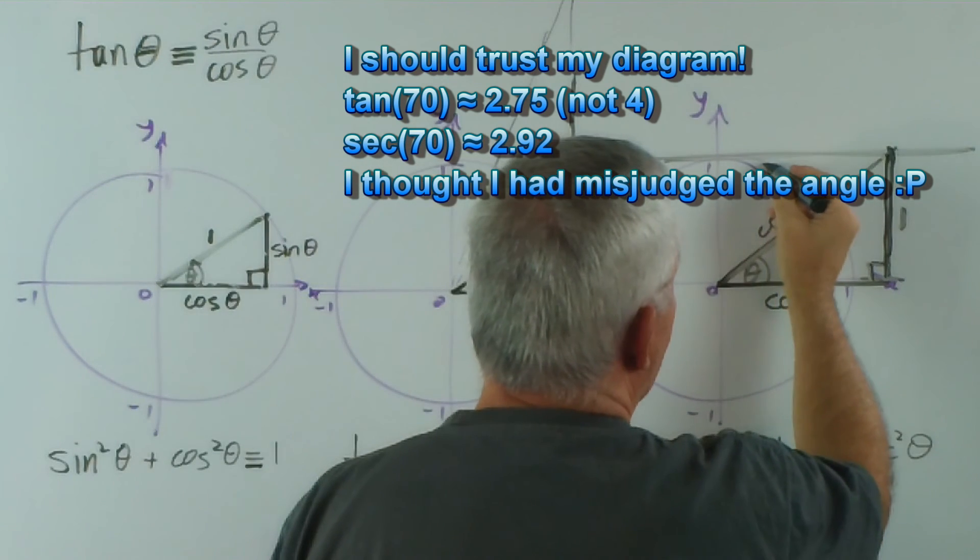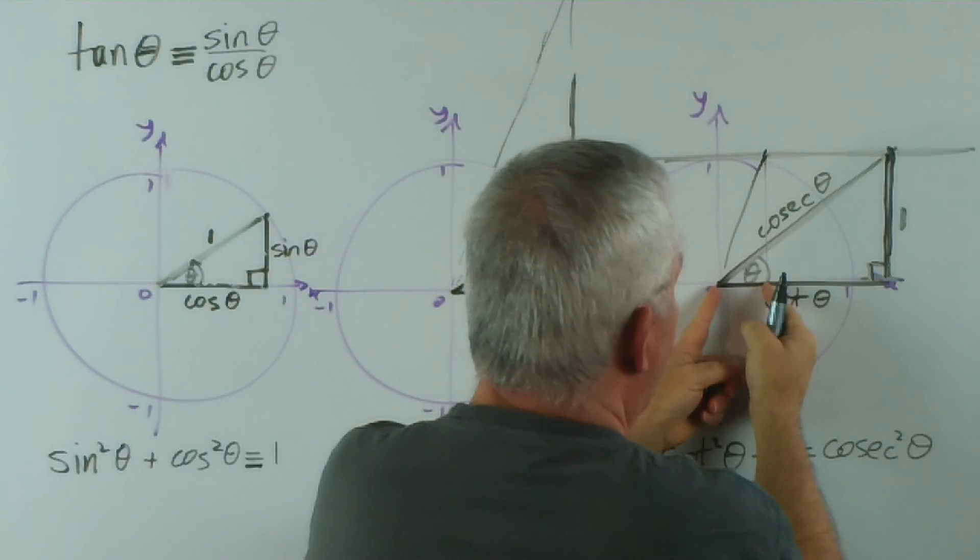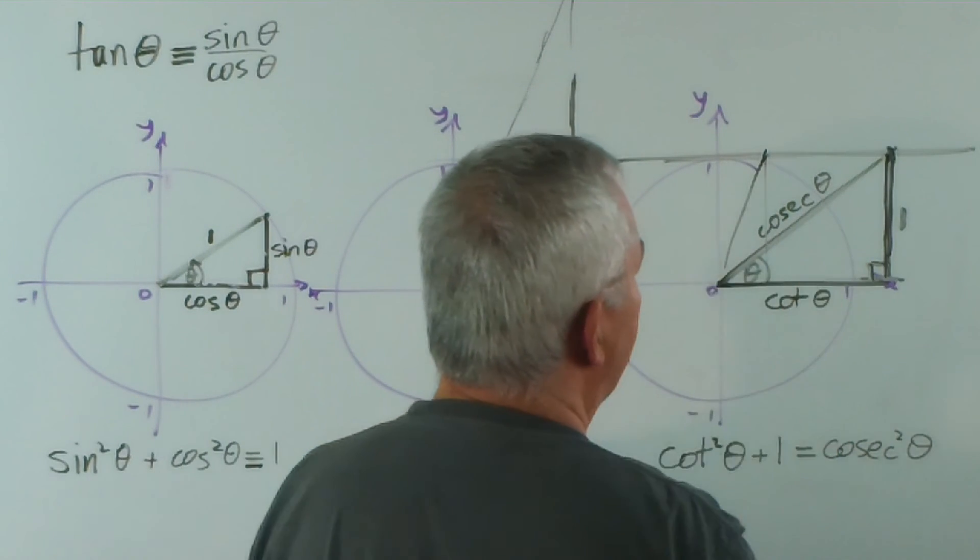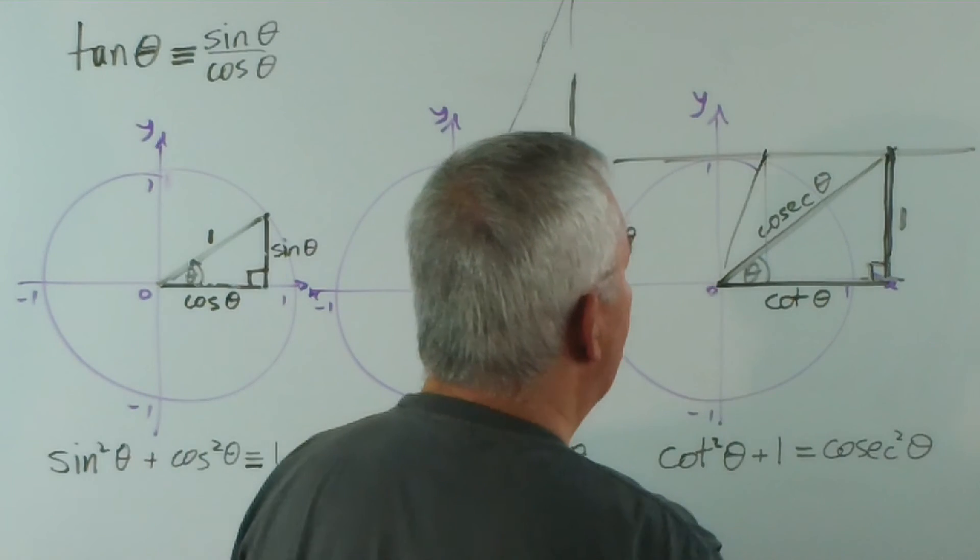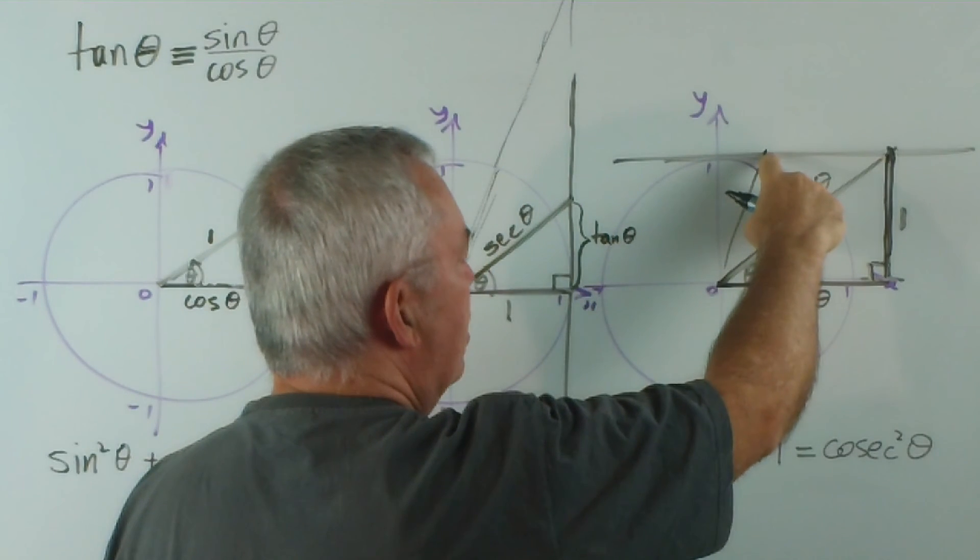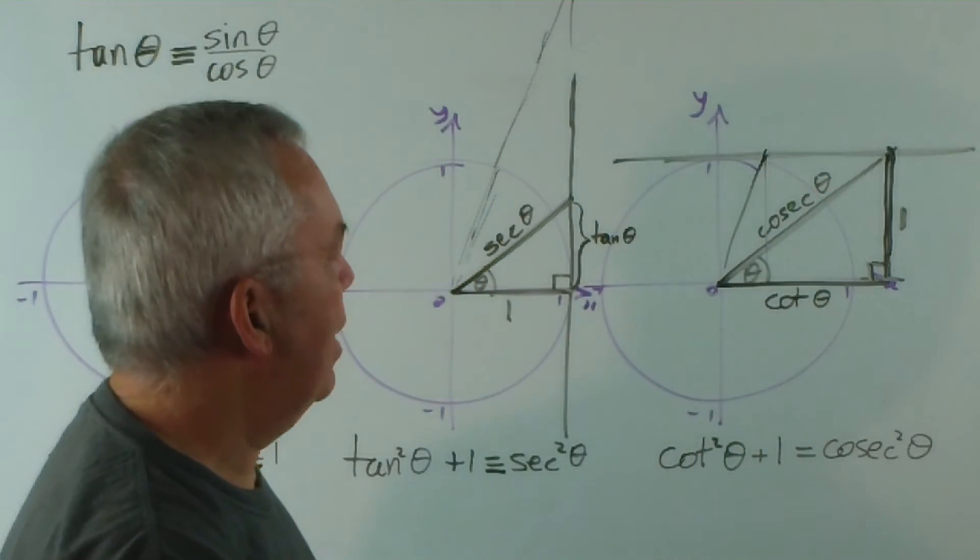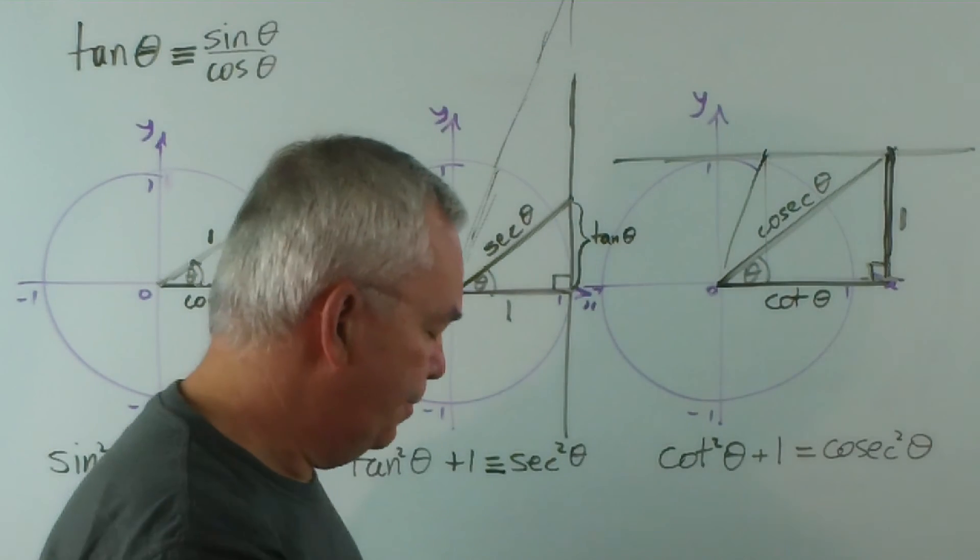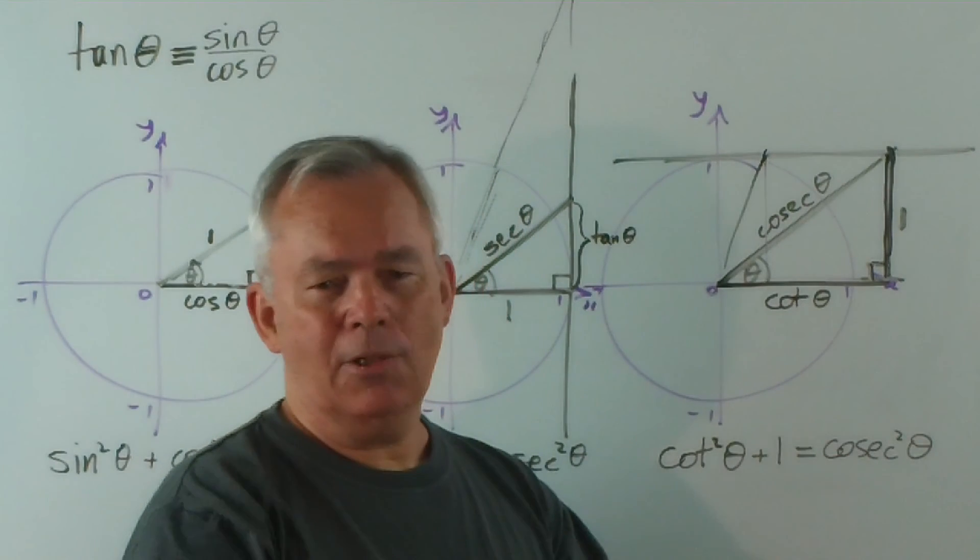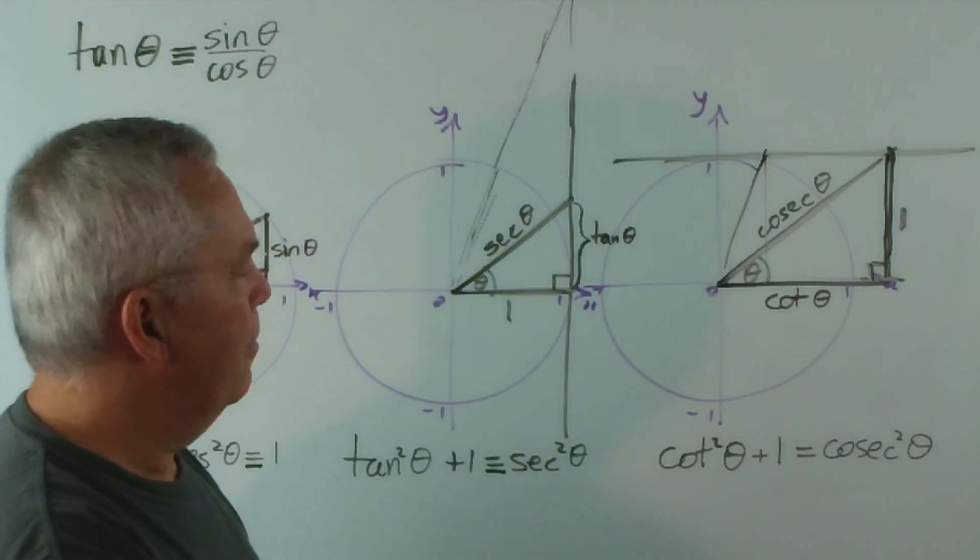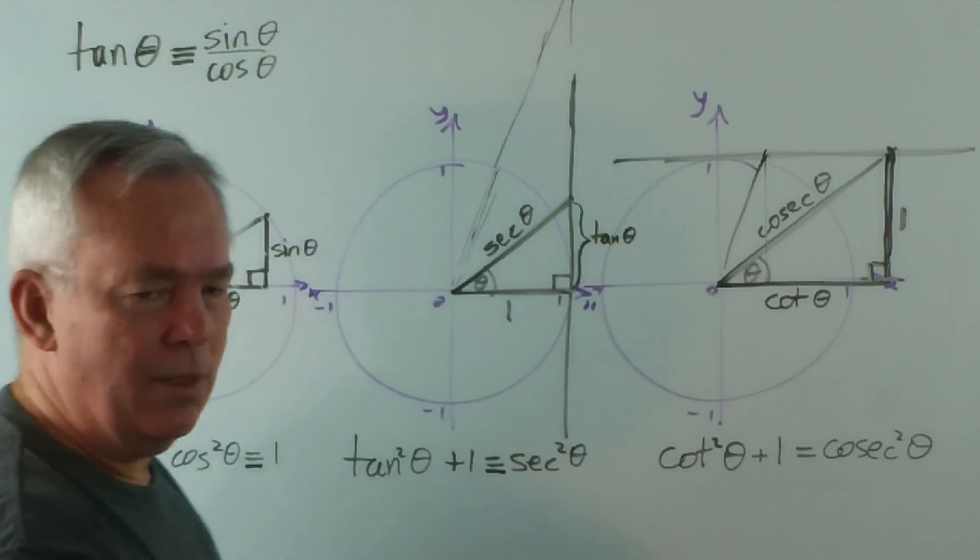And here if we found something like 70 degrees, the triangle here, the cotangent wouldn't be that great, perhaps 0.3, something like that. It's a bit hard to estimate in there, maybe a little bit more. And you can see that the cosecant will be just over 1, perhaps 1.1 or something like that.